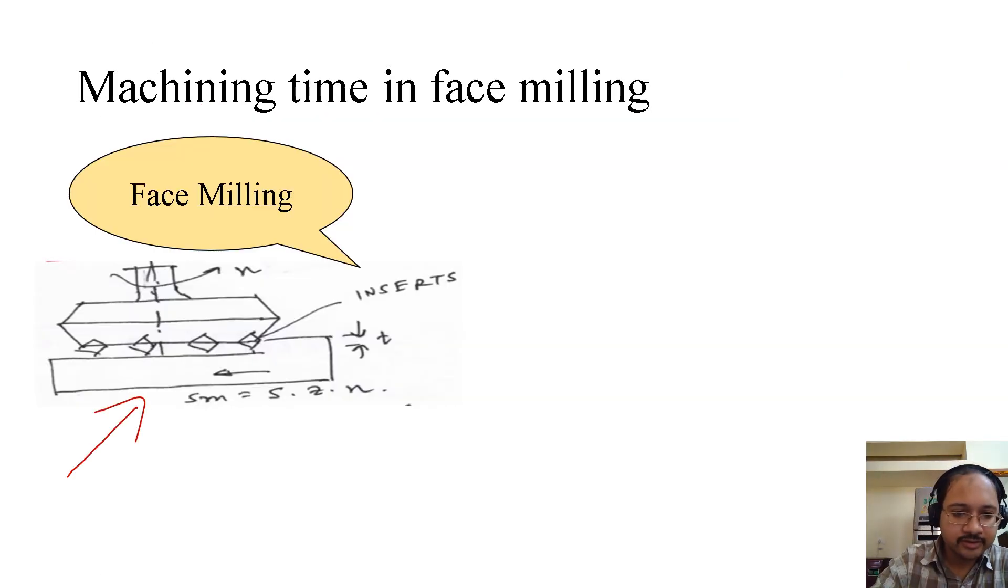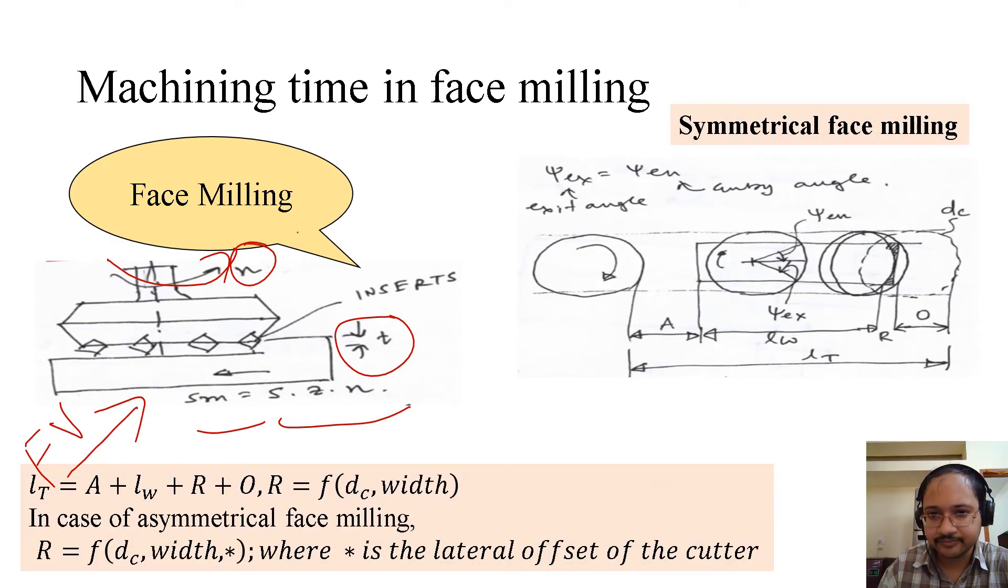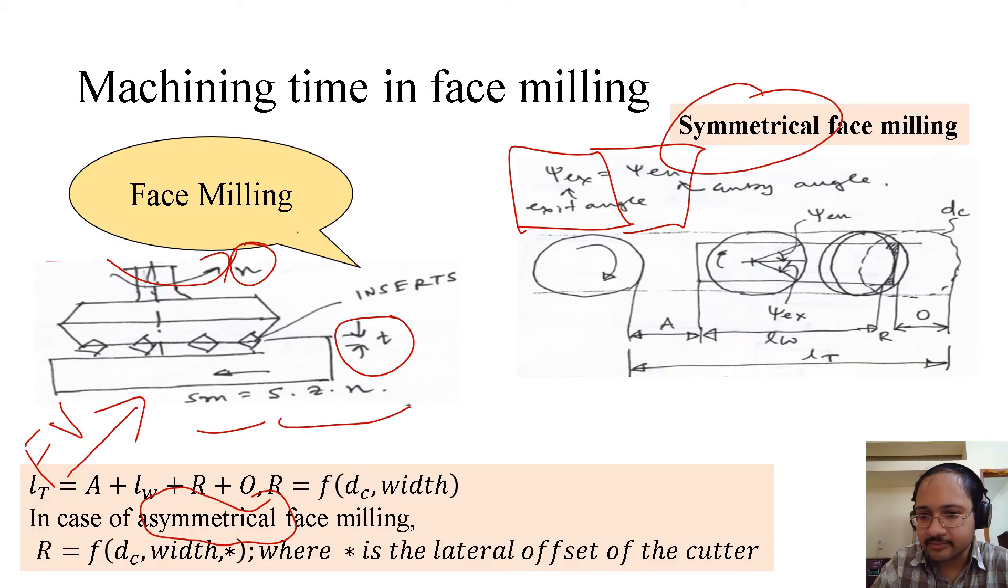The front view will look something like this. You have the inserts which we have seen in the video, this is the rotation of the cutter, this is the depth of the cut, and sm is again s times z times n. Now there can be two types of face milling: one is symmetrical face milling, another is asymmetrical face milling. First, let's look into the symmetrical face milling. In case of symmetrical face milling, the exit angle equals the entry angle, because if you look into this cutter axis, it is exactly matching with the job axis.